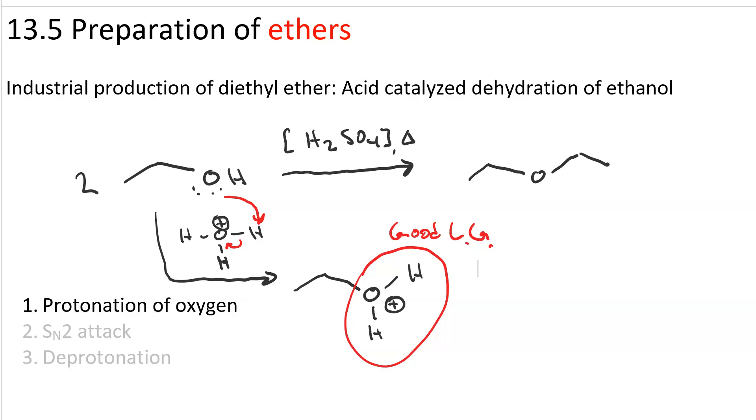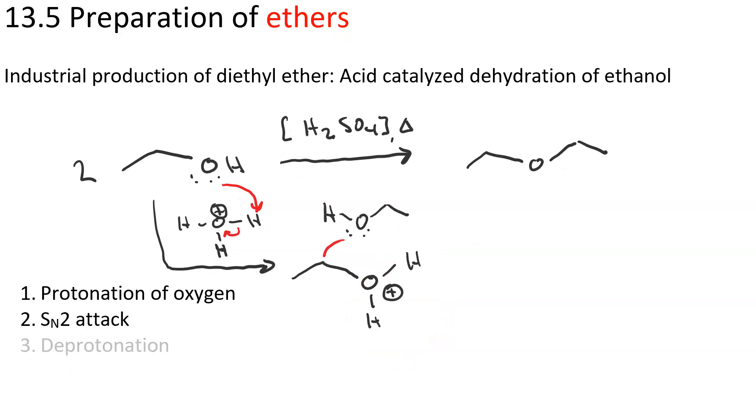This sets the stage for our next step, which is going to be nucleophilic attack at the alpha carbon and loss of that leaving group. So, two curved arrows. Nuke attack. Loss of leaving group.